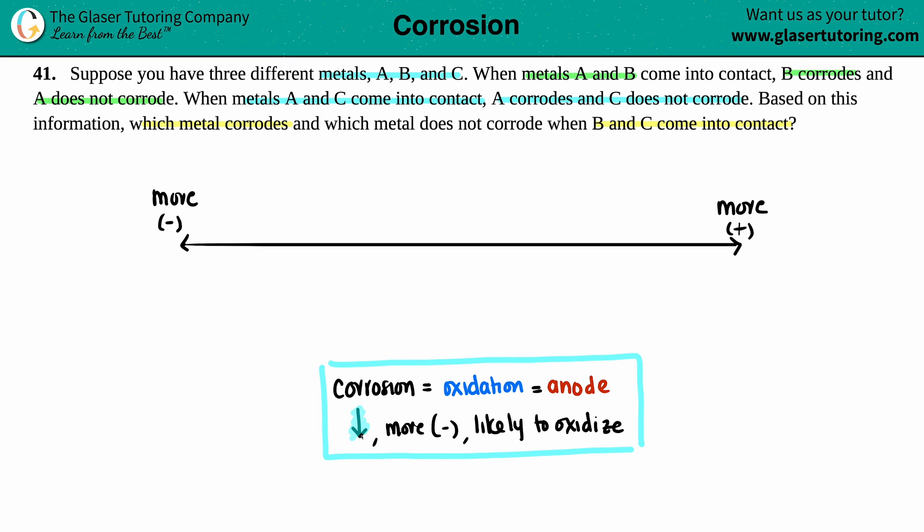So the lower the number, the more negative, you're going to oxidize, you're going to corrode. The higher the number, you're going to not corrode and you're going to reduce. So maybe we'll put oxidation on this side and reduction on the other side. And maybe I'll just put over here that this is going to be corrosion.